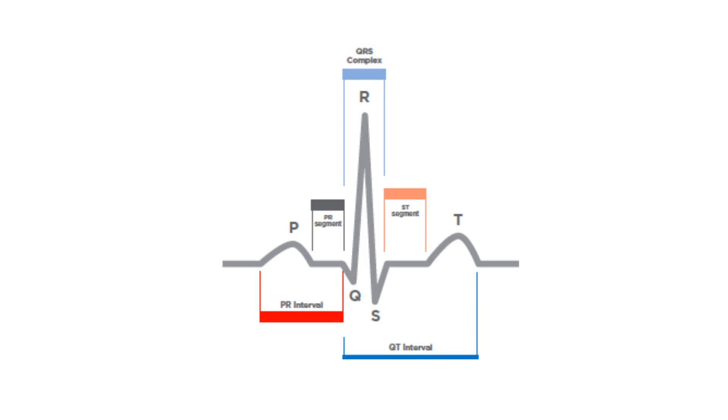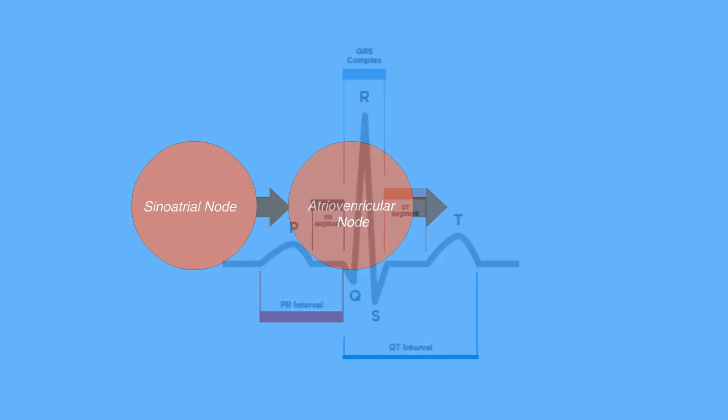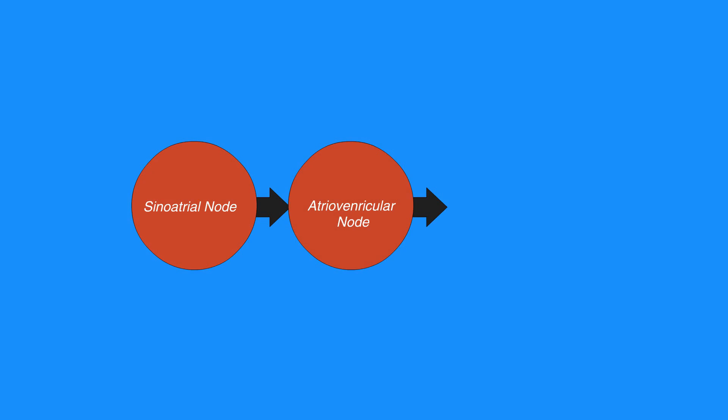This impulse then travels to the AV node, which in turn conducts the electrical impulse through the bundle of His, bundle branches, and the Purkinje fibers of the ventricles, causing ventricular contraction.